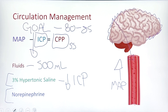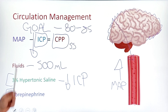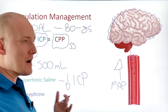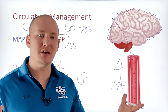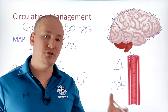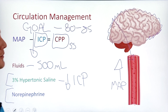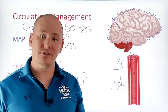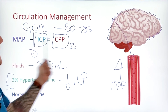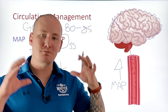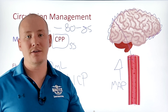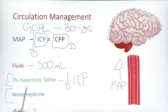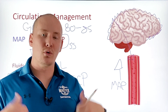Norepinephrine is our big gun that we might need if we can't maintain a mean arterial pressure of 80 to 85 using fluids, or let's say you've intubated this patient, you're ventilating them, using drugs for sedation like ketamine, or maybe you went with a drug that has a little more vasoactivity to it. We can use norepinephrine to compensate for that vasodilatory effect. Using norepinephrine to maintain that MAP as high as we can above 80 — to maintain cerebral perfusion pressures in a normal and safe range — is something to consider if you're seeing hypotension refractory to fluid use.